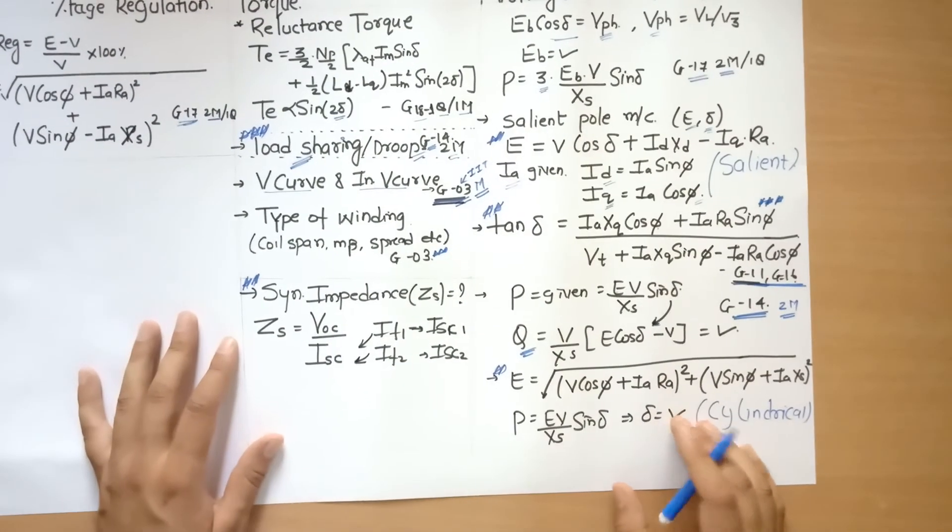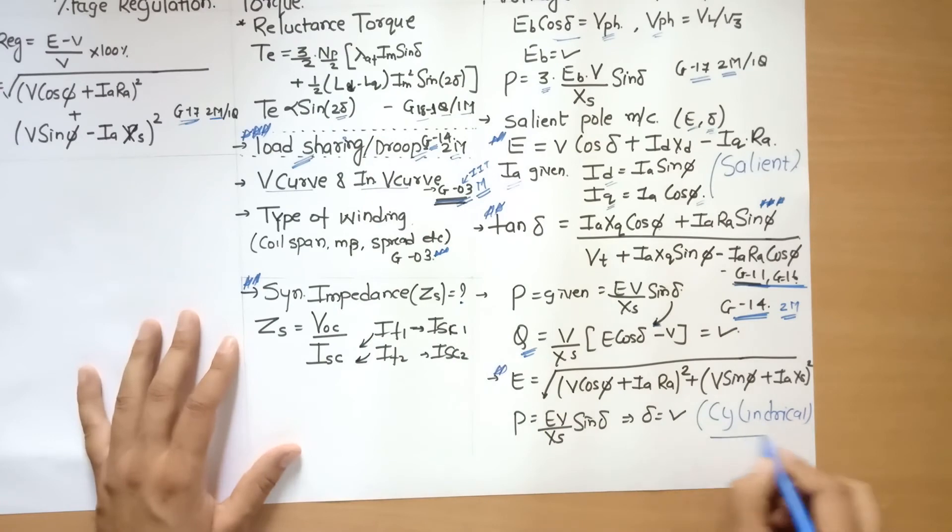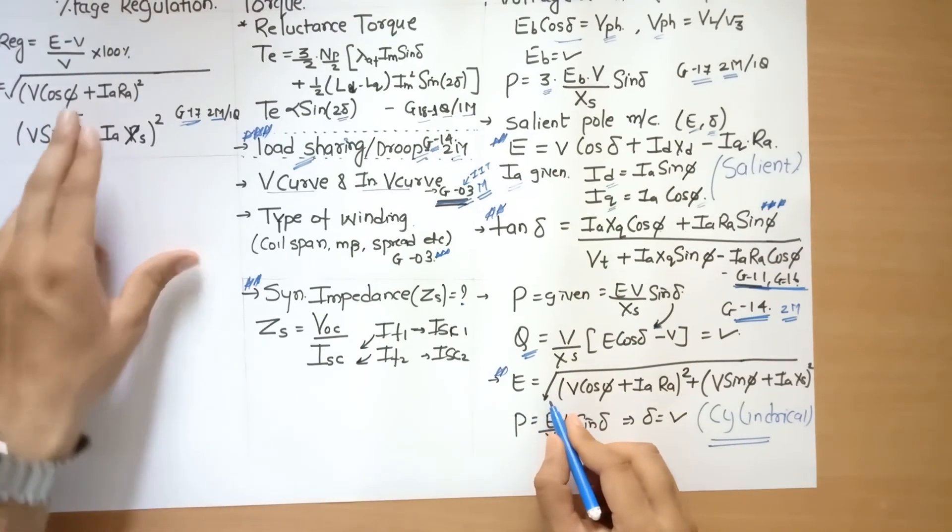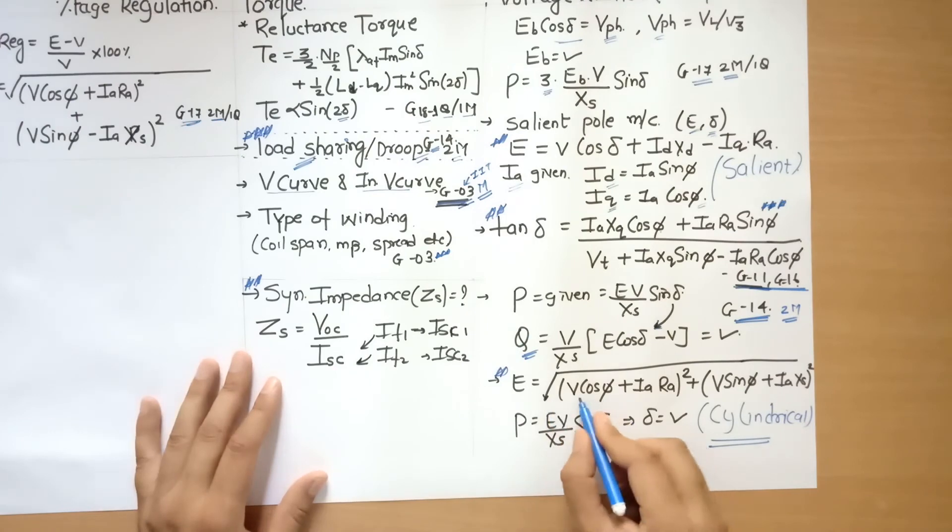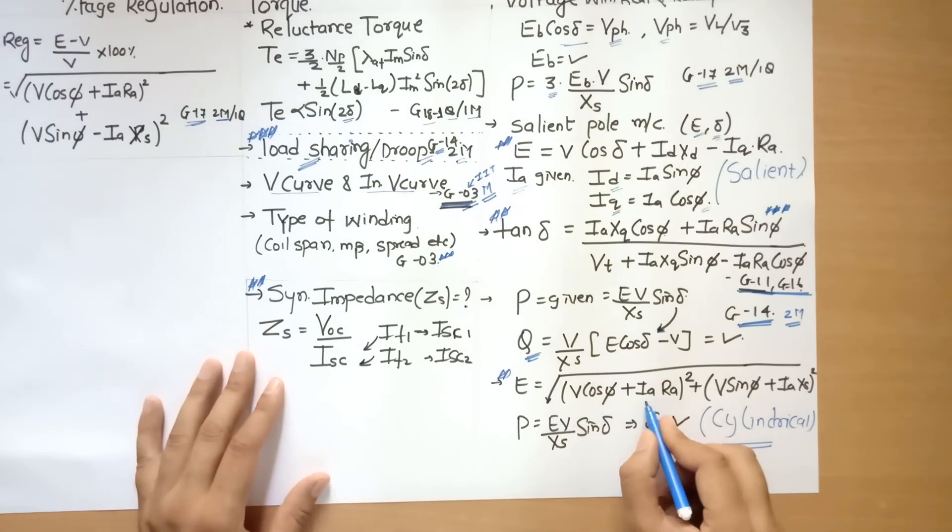Now there was another problem. It is a cylindrical EMF, so it is nothing but same as this one that we have already discussed: square root of (V cos phi plus Ia Ra)² plus (V sin phi plus Ia Xs)². Based on that, you need to find out delta.